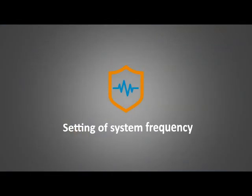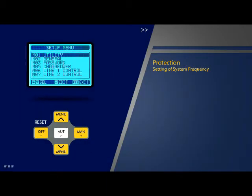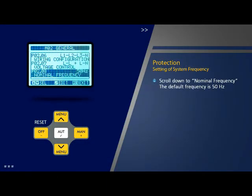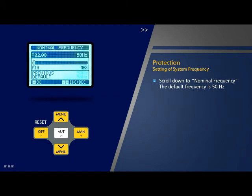Setting up system frequency: Scroll down to parameter 8 which is 'Nominal Frequency' on the general page and press OK. The default frequency is 50 Hz. Scroll to change the value to 60 Hz and press OK. Now 60 Hz is the new default frequency.